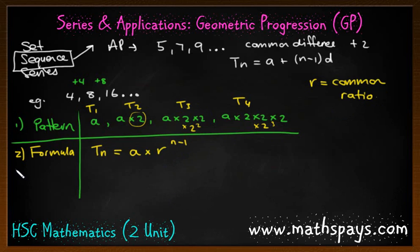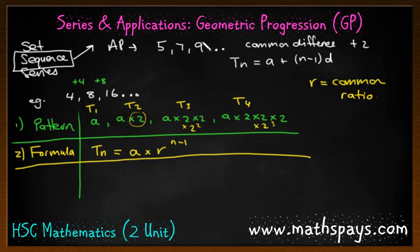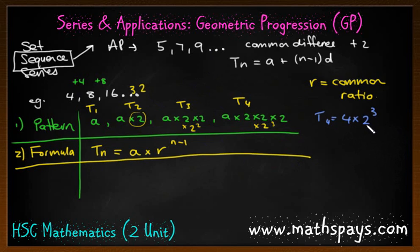That's our formula approach. We know from this sequence the next term's going to be 32 because we're doubling it. We can test it: T4 equals a, which was 4, times 2 to the power of 4 take away 1, which is 3. So 2 cubed is 8, times 4 is 32.